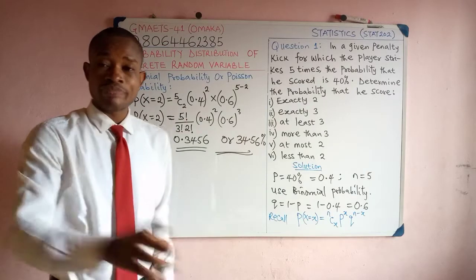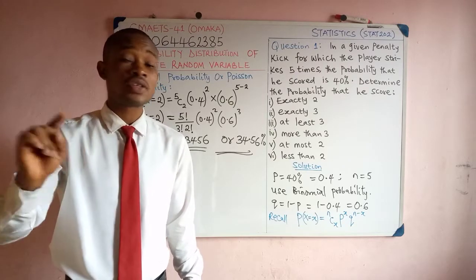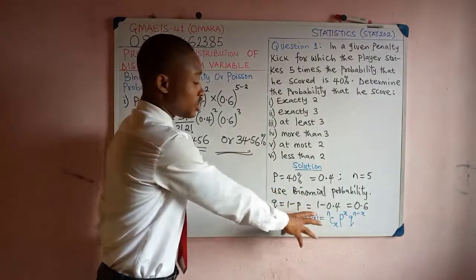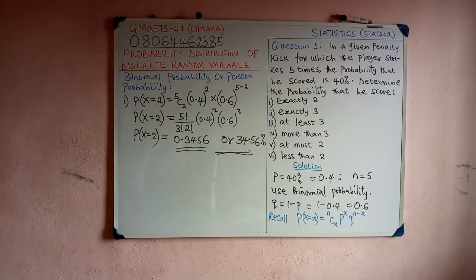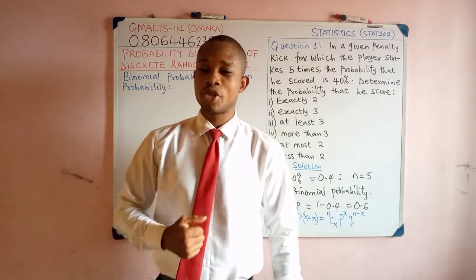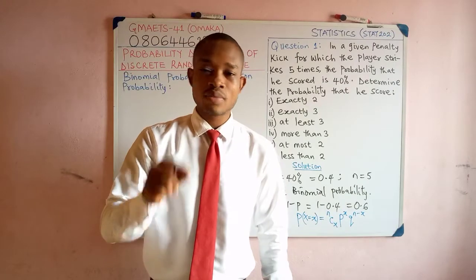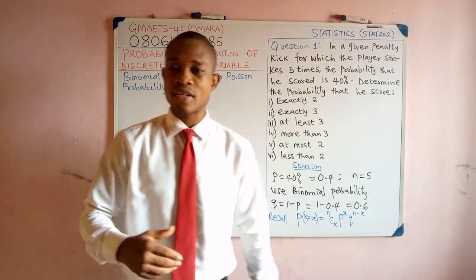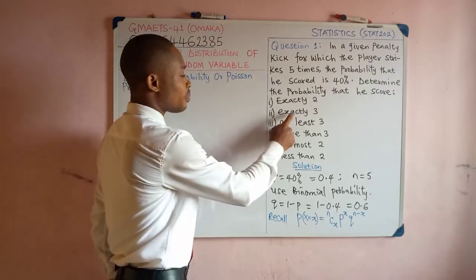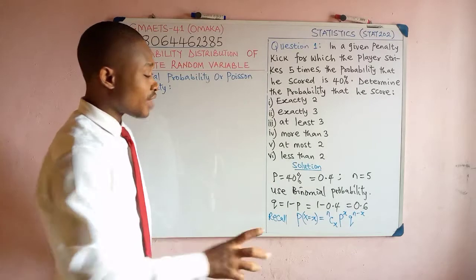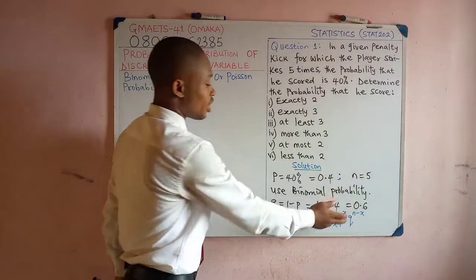When working with binomial probability, N will be constant throughout the experiment. The outcomes P and Q — success and failure — will also be constant throughout. Which means the only thing that changes in our calculation is the value of X. Before the break we obtained P(X=2) = 0.3456, or 34.56%. Now we want to determine the probability that the player scored exactly 3. N remains 5, and P and Q remain constant.